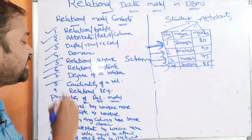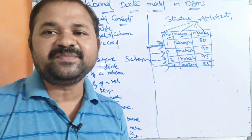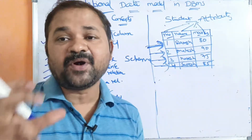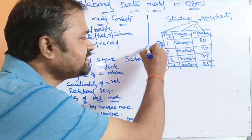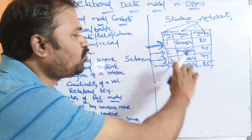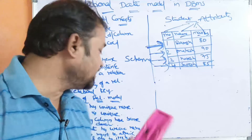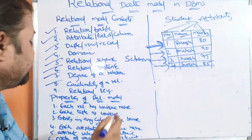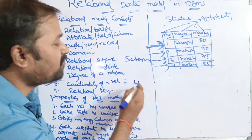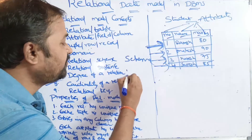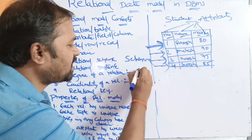The next terminology is cardinality of the relation. Cardinality means the number of rows present in the relation. Here we have four rows, so the cardinality of the relation is four. So cardinality means number of rows, and degree means number of columns.